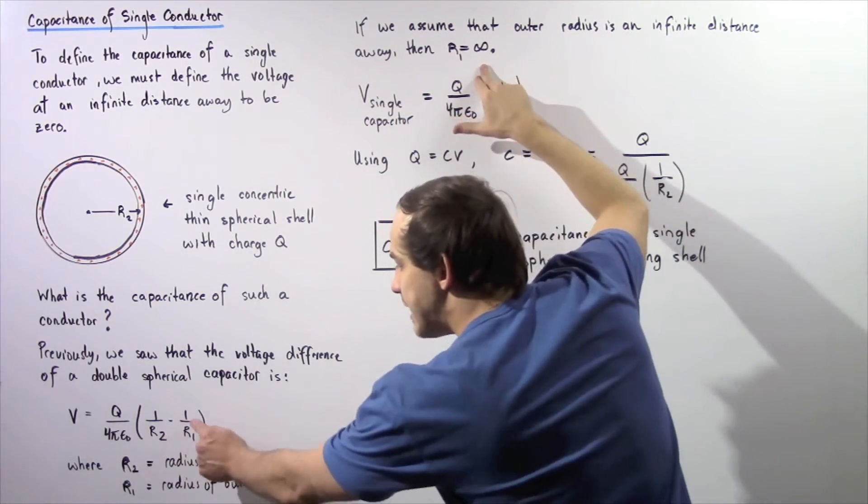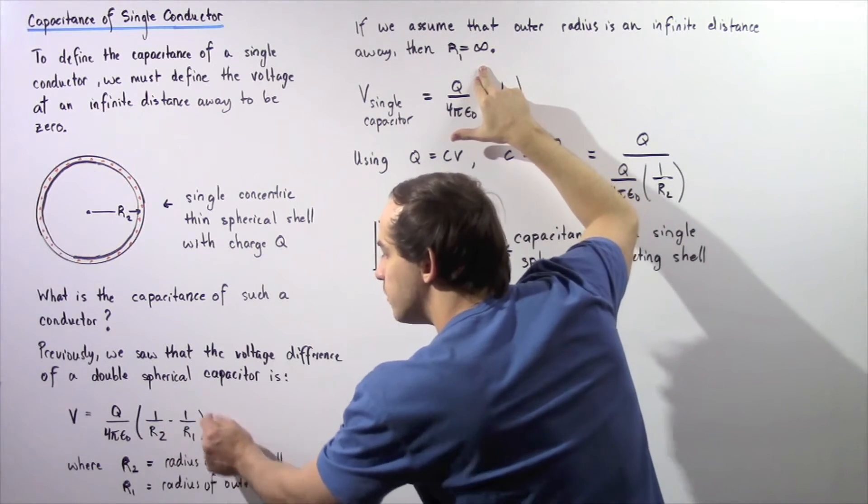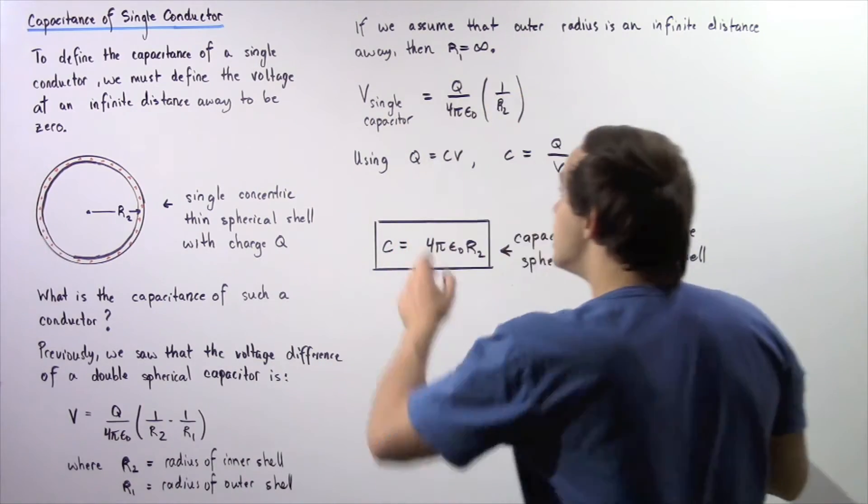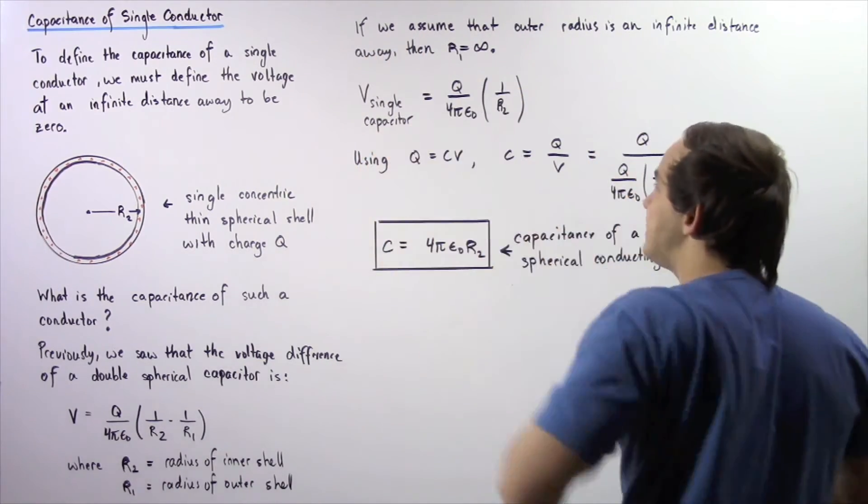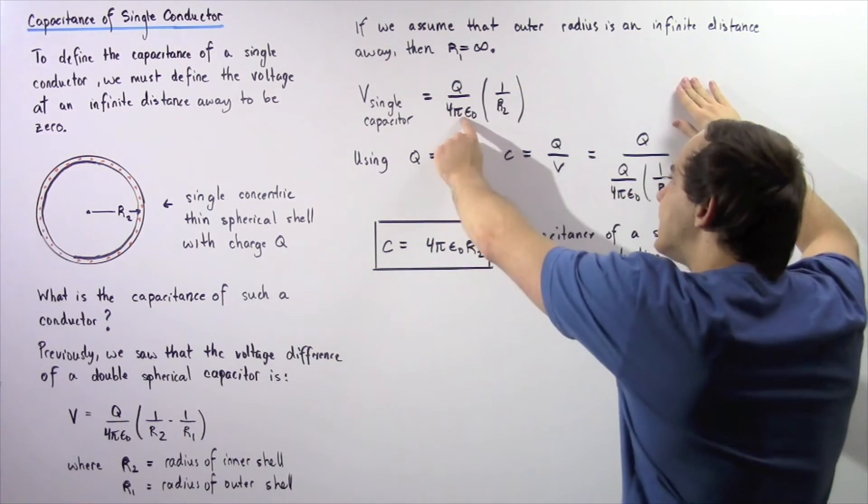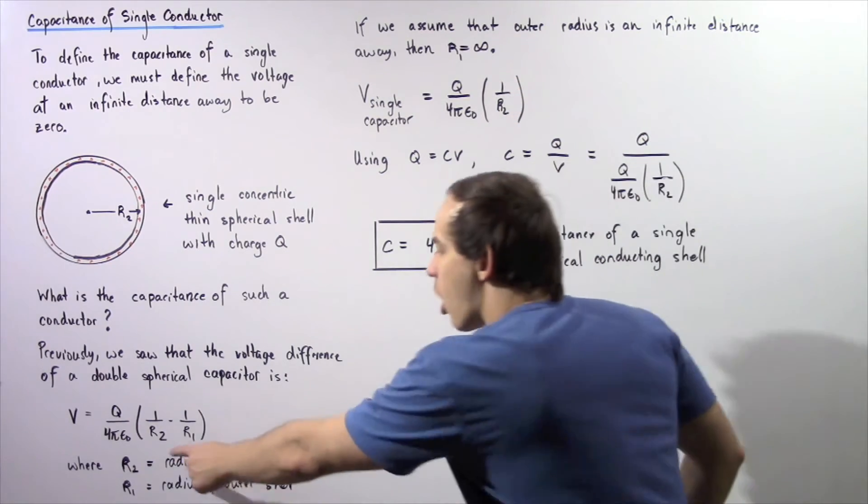And that means if this quantity is infinitely large, this fraction will be equal to zero. So the voltage of a single capacitor is equal to q divided by 4π ε₀ multiplied by 1/R2, where R2 is the radius of this particular single concentric thin sphere.